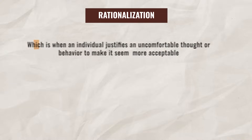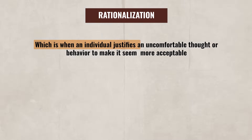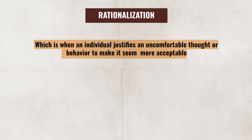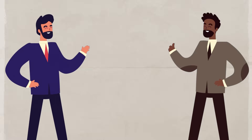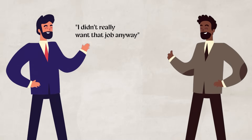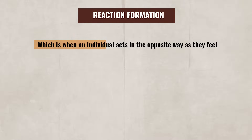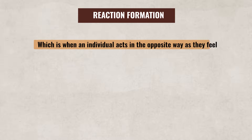Up next is rationalization, which is when an individual justifies an uncomfortable thought or behavior to make it seem more acceptable. For instance, after failing to get a job from a job interview, someone claims they didn't really want the job anyway, even though originally they were excited about it. There's also reaction formation, which is when an individual acts in the opposite way as they feel. For example, we all know that one person who acts rude or dismissive towards someone else, even though we all know they secretly like them.